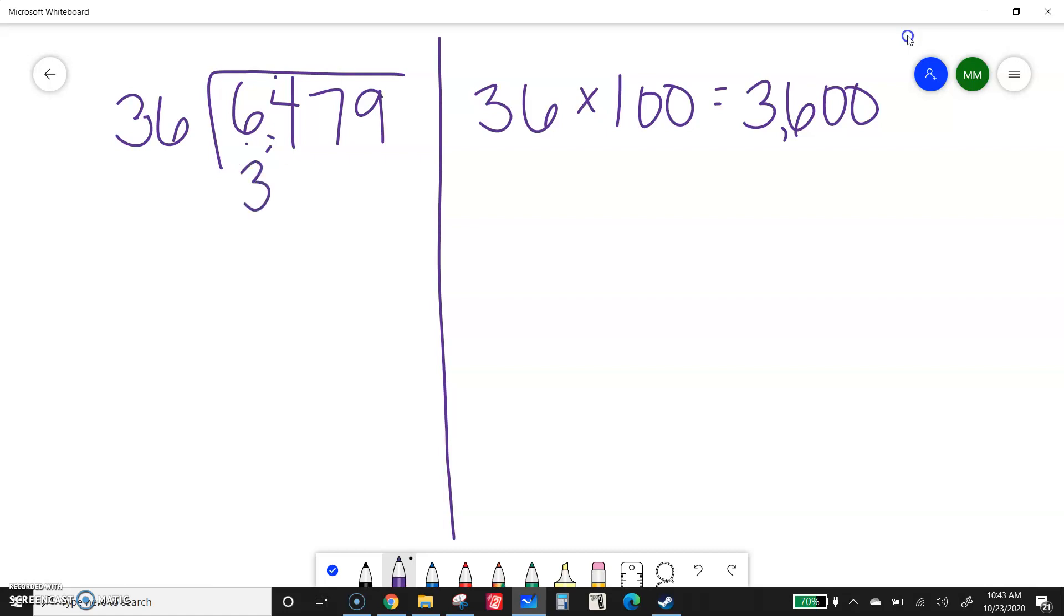So then I will subtract 3,600. That's 9, 7. I cannot do 4 minus 6 so I need to borrow. That's 14 minus 6 is 8. 5 minus 3 is 2. Okay so 2,879.